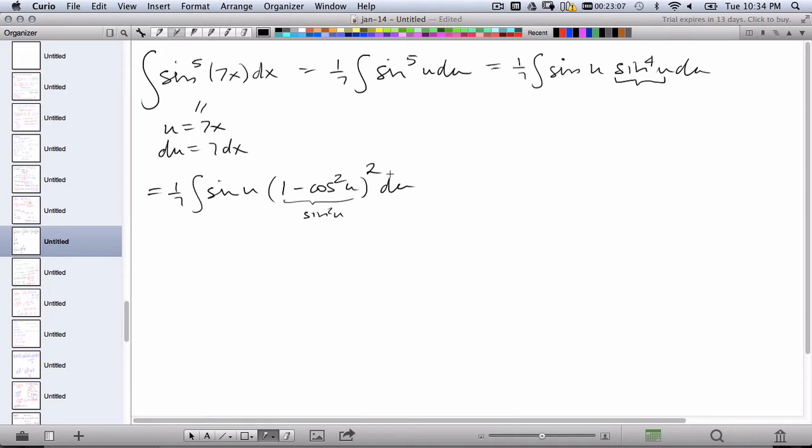So now we can foil this out. And 1/7th sine u times, again, I'm just squaring this binomial, so 1 minus 2 cosine squared u plus, now it's cosine to the fourth u du.